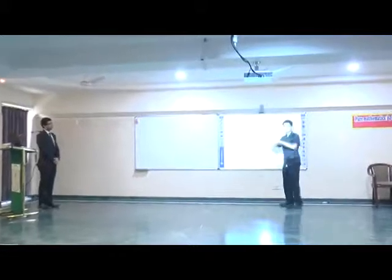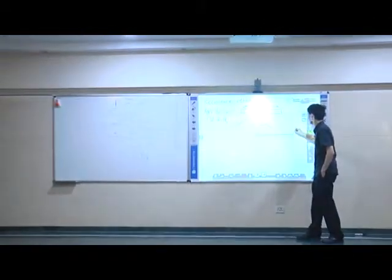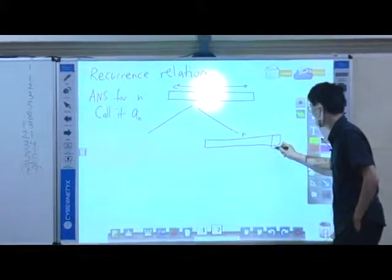The answer for n is how many ways there are to tile. Every tiling is of one of two cases. Either the tiling is of the form where this is n-long, and the very last thing is a square.